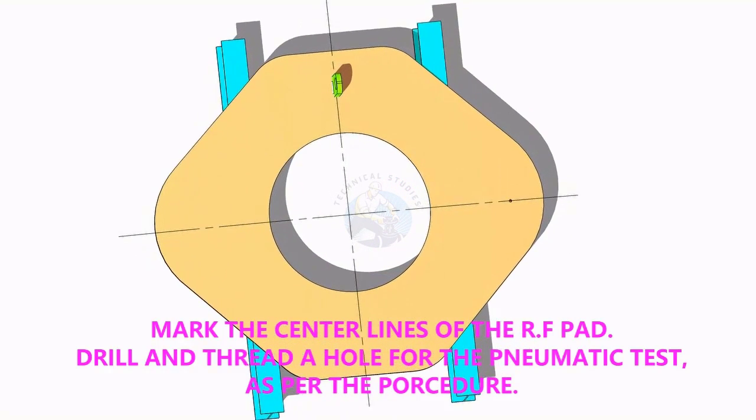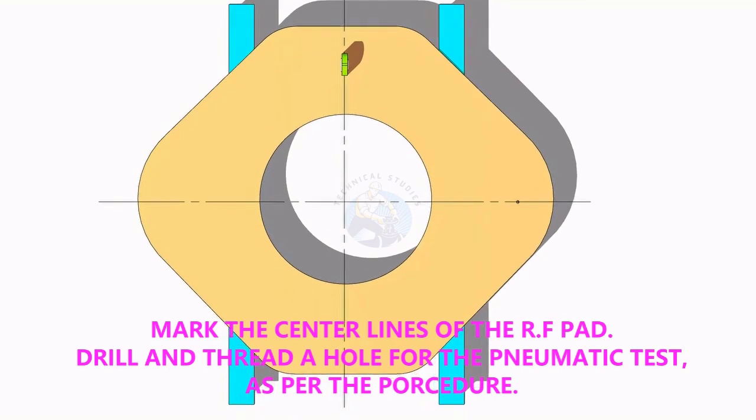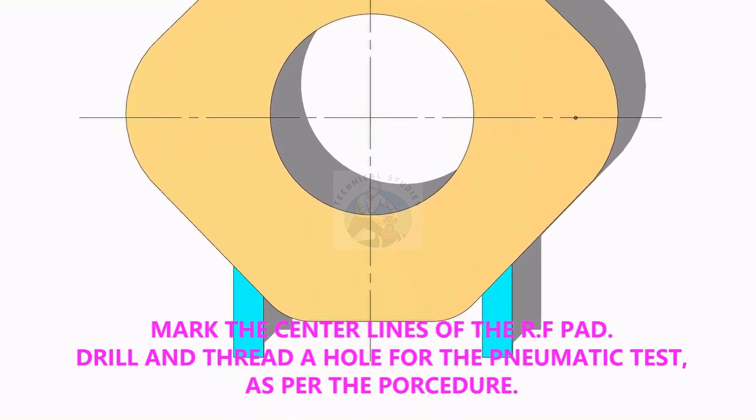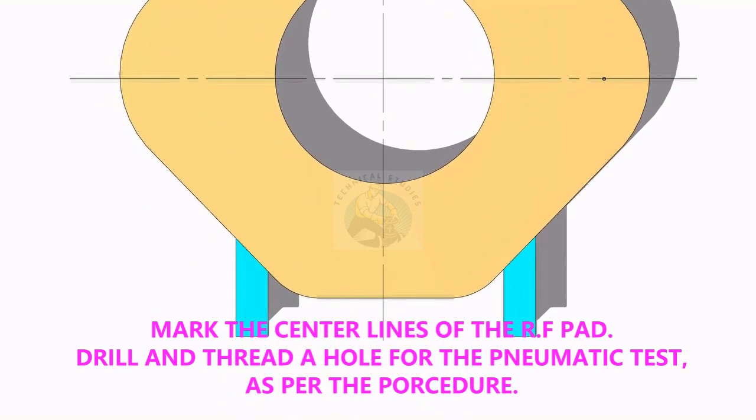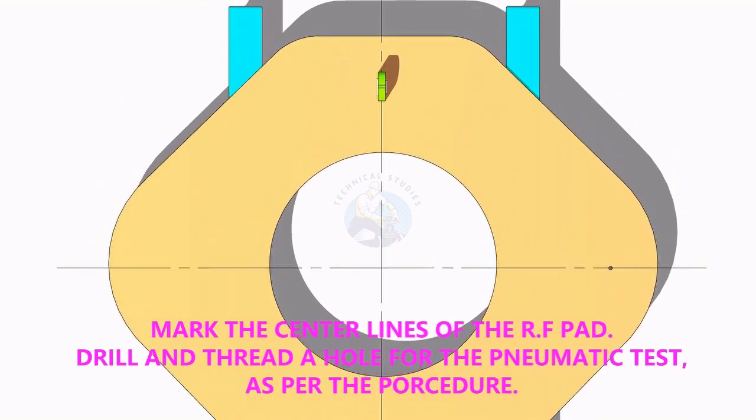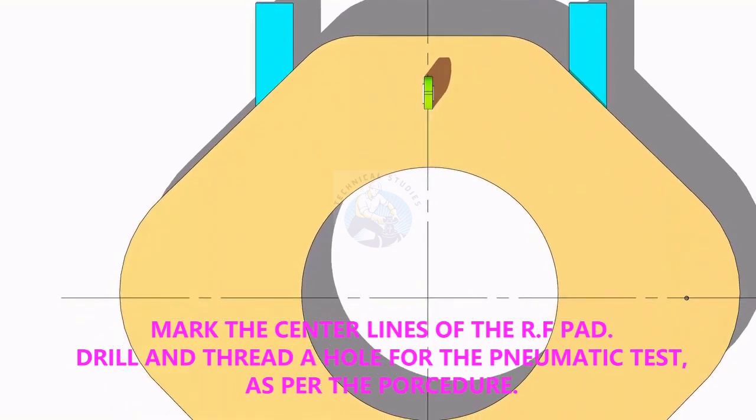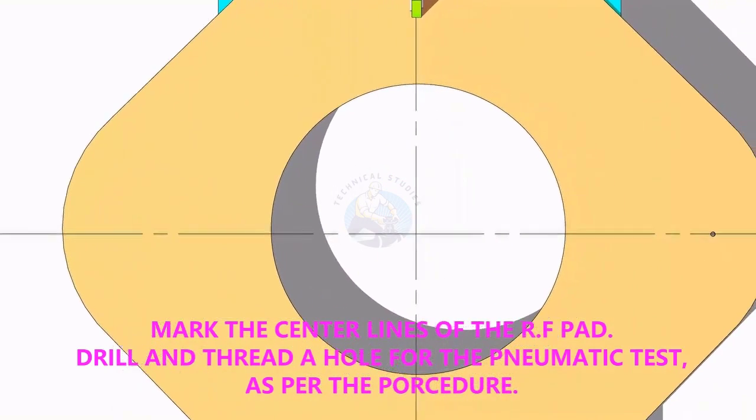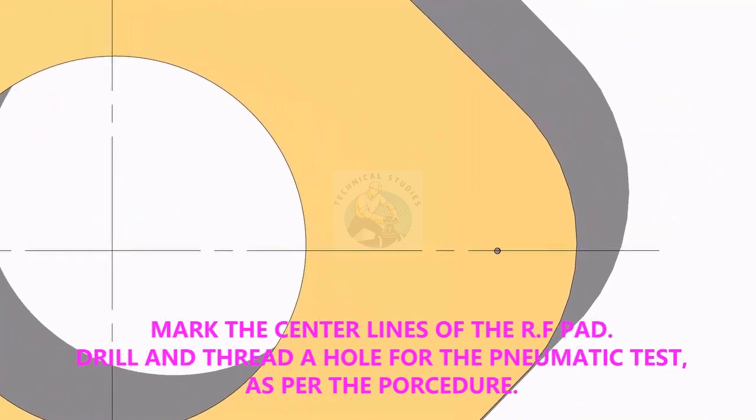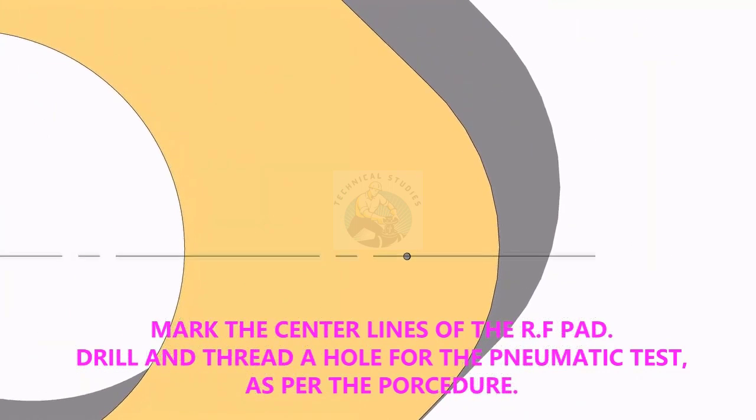Mark the center lines of the reinforcement pad. Don't forget to drill and tap the telltale hole. If necessary, TAC weld a lifting hook on the pad as shown.